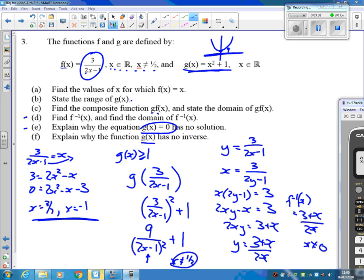Explain why g of x has no inverse. Well, there'll be no inverse because this is a many-to-one function. So if we said, I don't know, what happens here when x is 10—sorry, when g of x is 10—there'd be two different answers: 3 and minus 3.